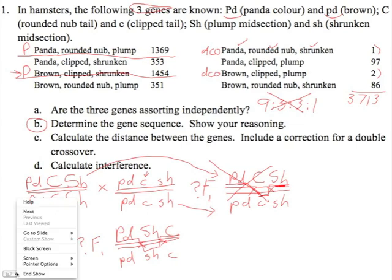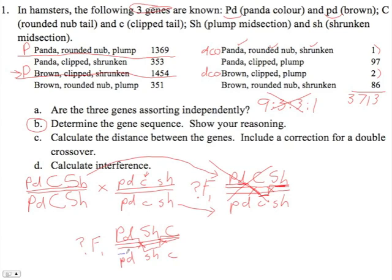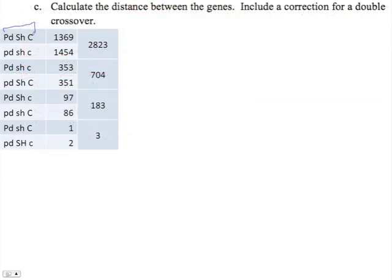Let's try the other double crossover class. We've got BROWN, PLUMP, CLIPPED on one chromosome, with the other chromosome recessive for all traits. So we have all genes in coupling on one chromosome and all genes in coupling on the other — those are the parental classes. These are the double crossover classes. Notice they're of approximately the same magnitude in all cases, and all eight phenotypic classes are present.